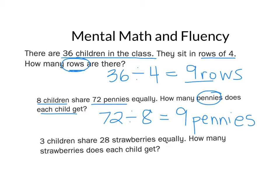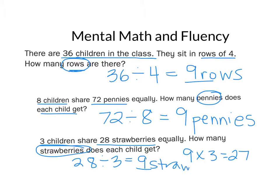And the last one. Three children share 28 strawberries equally. So we have 28 strawberries, and we have three children. How many strawberries does each child get? So when I'm doing this one, I try to think of what times three is 28. I can think of the fact that nine times three equals 27. So that would mean I would have nine strawberries for each child, and then there would be one left over. Because it's a strawberry, you could cut that apart. So you could say nine and one-third strawberries. Either one of those answers would be acceptable.